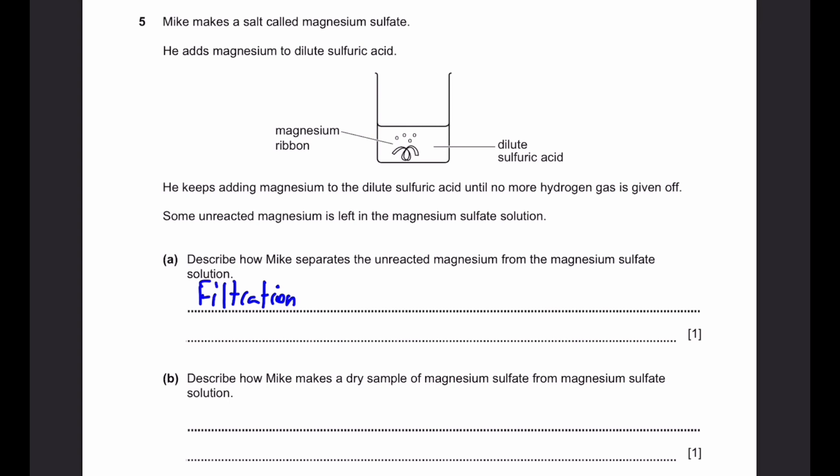Part B. Describe how Mike makes a dry sample of magnesium sulfate from magnesium sulfate solution. It's also quite easy. Slow evaporation of water from solution.